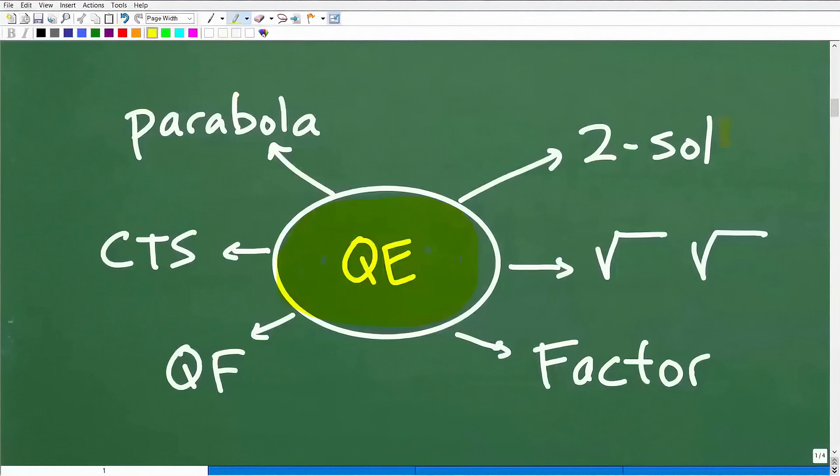As soon as you're thinking, oh, this is a quadratic equation, these are the things that should pop into your brain. The first thing is you're always going to have two solutions. Right off the bat, you're saying to yourself, okay, I'm not looking for one solution like x equals 5. You're looking for two solutions. Quadratic equations will always have two solutions. These solutions could be real number solutions and or imaginary number solutions.